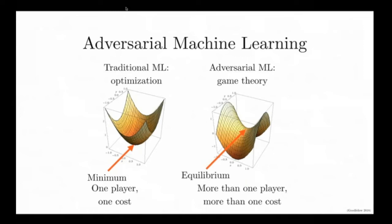We can model this with the language of game theory and draw a value function where we're looking for a point called a Nash equilibrium — one that is simultaneously a minimum of the defending player's cost and a maximum of the attacking player's cost. For example, this is a point where the spammers can't get any more of their spam through the system unless they were somehow able to change the spam detector, and the spam detector is not able to gain any more accuracy unless it was able to change the spam generation algorithms used by the spammers.